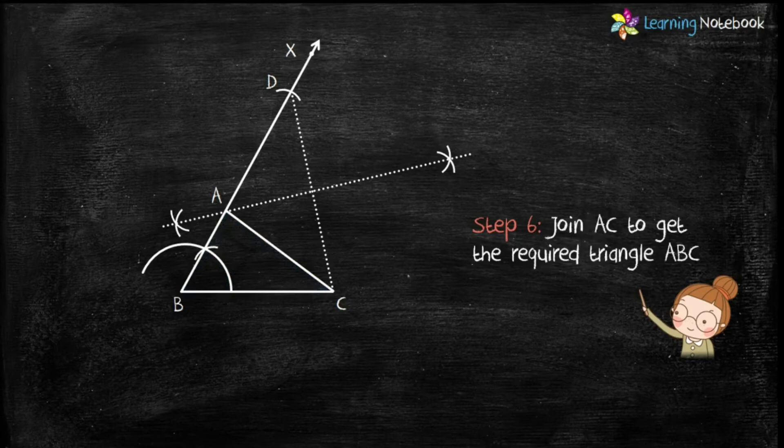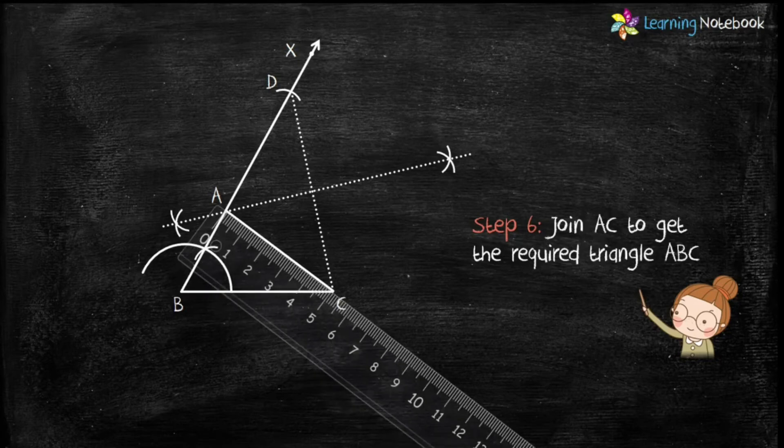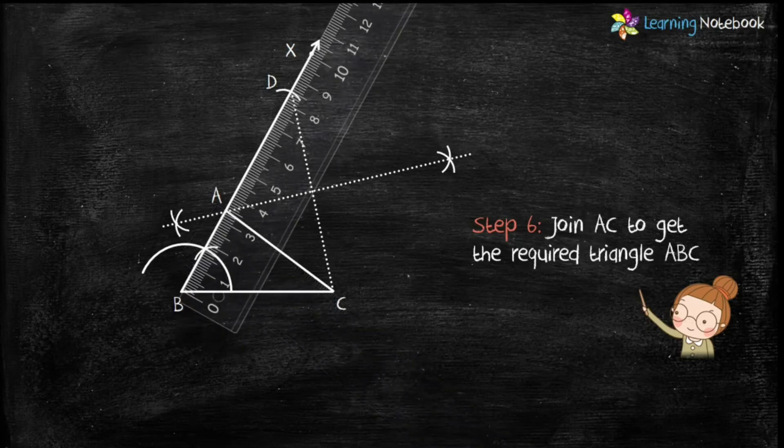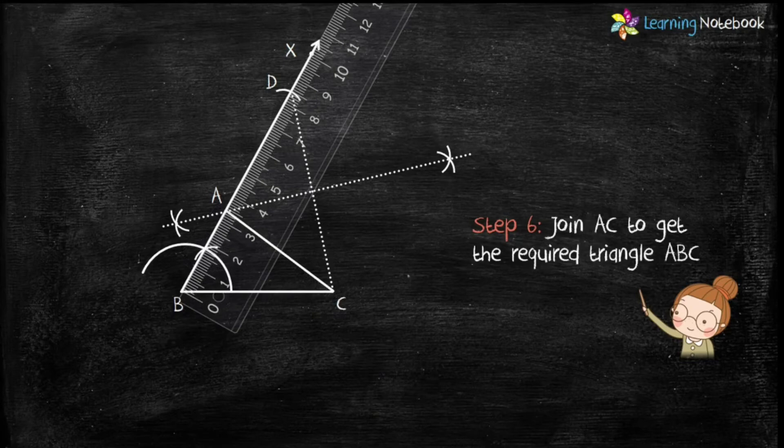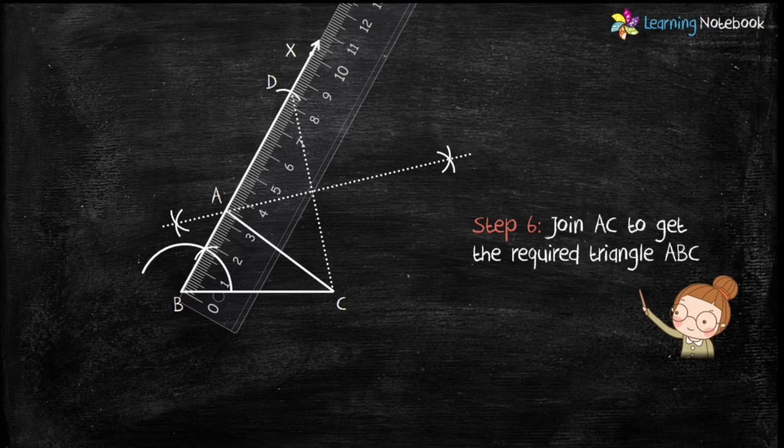Students, you must measure the length of AB and AC. The sum of their length should be equal to 8.4 cm. Then, only this construction would be correct. So, let's measure AB and AC. AC equals to 5 cm and AB equals to 3.4 cm. So, AB plus AC equals to 8.4 cm. Therefore, we can say that this construction is correct.